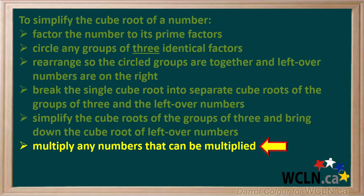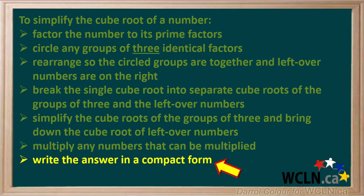Now multiply any numbers that can be multiplied either outside of a radical or inside of the radical. Lastly, write the answer in the most compact form it can be.